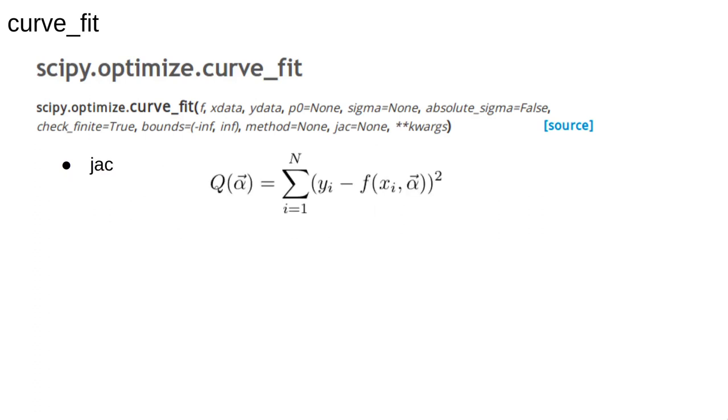One final point, the method used behind the scenes by curve_fit to find the best parameters comes from the same equations we discussed for linear least squares, minimizing the sum of the squared residuals. This time, the differential equation cannot be solved analytically, so the parameter values are changed by a small amount and the corresponding change in the sum of squared errors is measured.